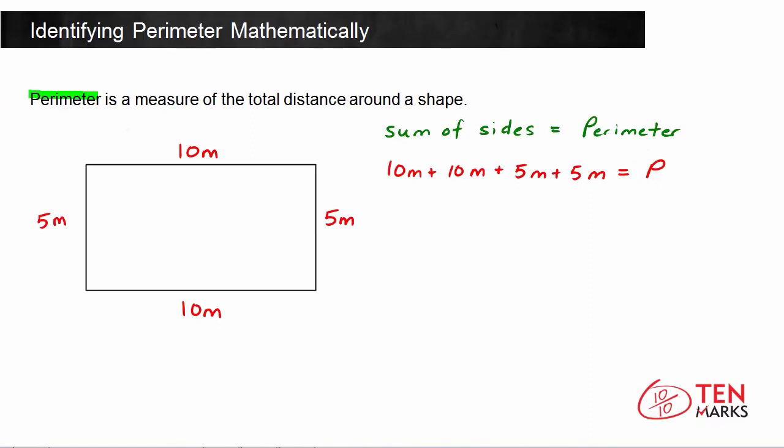I just want you to notice something. We have 10 plus 10, and we have 5 plus 5. We can rewrite this entire addition sentence as 2 times 10 meters plus 2 times 5 meters. Because you have 10 plus 10, which is the same thing as 2 times 10, and the same thing goes for 5 plus 5. Now, you can rewrite this one more time again, and that's because of the distributive property.